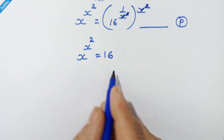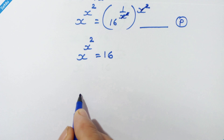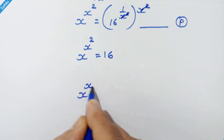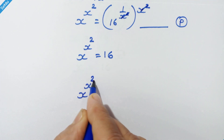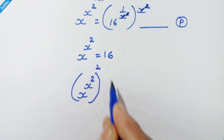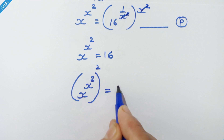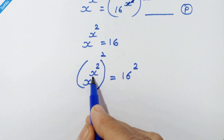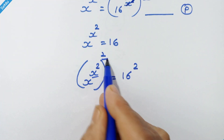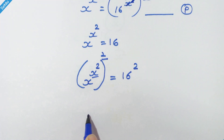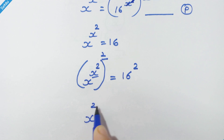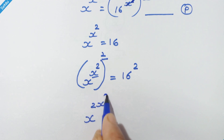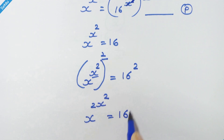Let's square both sides. So we have x raised to x square, whole square, is equal to 16 square. This two will be multiplied, so we have x raised to 2x square is equal to 16 square.